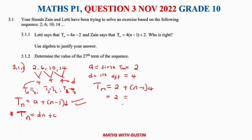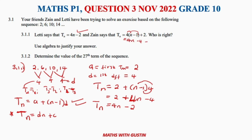Removing the brackets: 4(n − 1) = 4n − 4, so Tn = 2 + 4n − 4 = 4n − 2. Now checking Zayn's formula: 4(n − 1) + 2 = 4n − 4 + 2 = 4n − 2. Therefore both Letty and Zayn are correct — their expressions are algebraically equivalent.